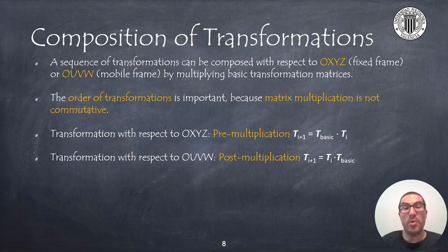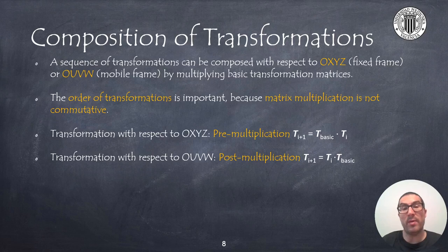To compose a sequence of transformations, we can perform successive multiplications in both Oxyz, the fixed reference frame, and Ouvw, the mobile reference frame. However, it is very important to consider that matrix multiplication does not satisfy the commutative property, and therefore the order of transformations is important.